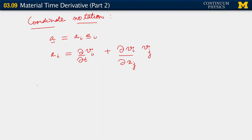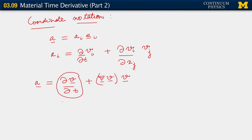When we write A equals partial of v with respect to time plus gradient of v times v, we recognize that what we have on the right-hand side is indeed a time derivative. However, it's different from the partial time derivative. This term is what sometimes gets called the convective time derivative.